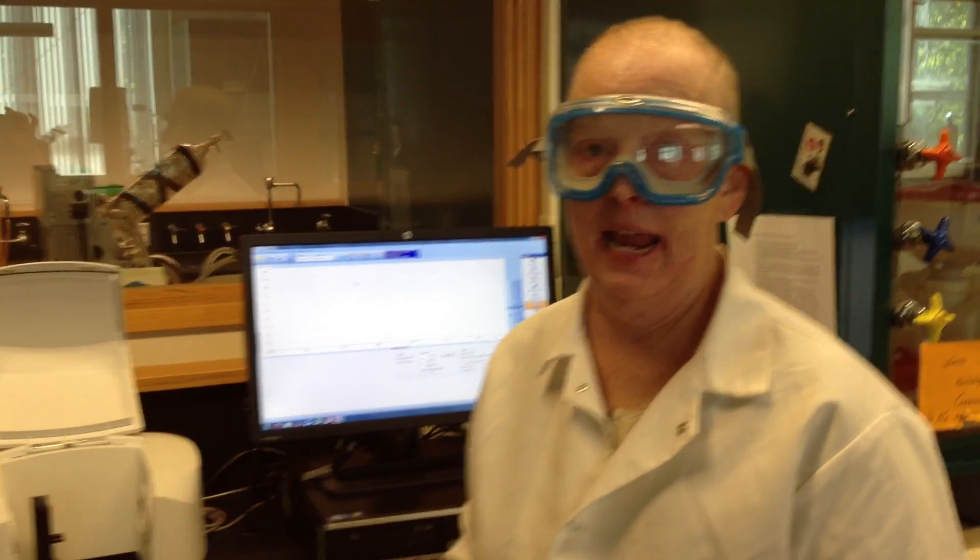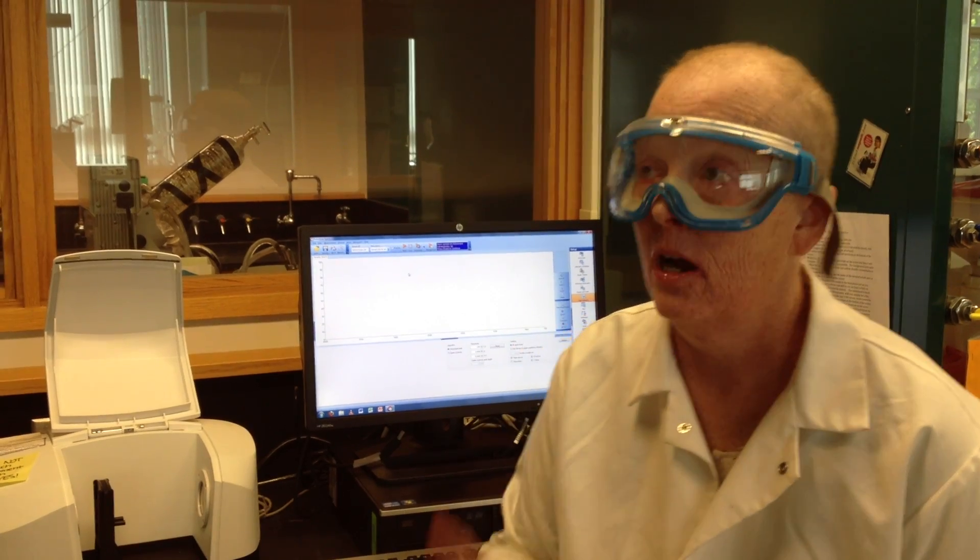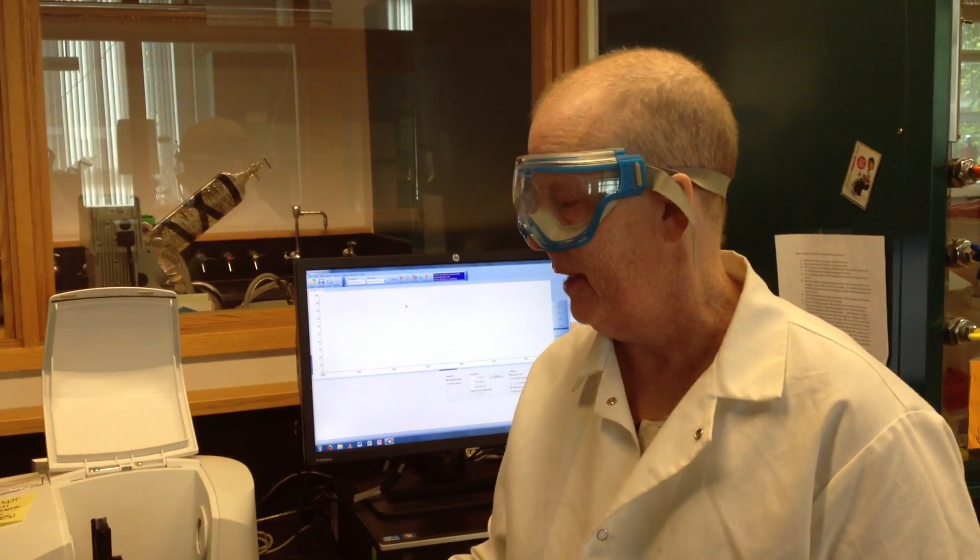The first thing I have to do is run a background. A background is a spectrum of the air. I'm going to put nothing in there. I always run my backgrounds of just nothing. You can also run a background of just a very clean cell. The problem is, sometimes when lots of students are running, the cells aren't meticulous. And because of that, the background is not always perfect. All we want to do is see air. What's in air? There's lots of stuff in air. However, it's mostly carbon dioxide and water. We're essentially running a spectrum of carbon dioxide and water that will be subtracted from the spectrum of your sample, which will also have carbon dioxide and water. By subtracting the two, what you'll have left is your sample. You don't want the air peaks to obliterate your spectrum. That's how sensitive this thing is.